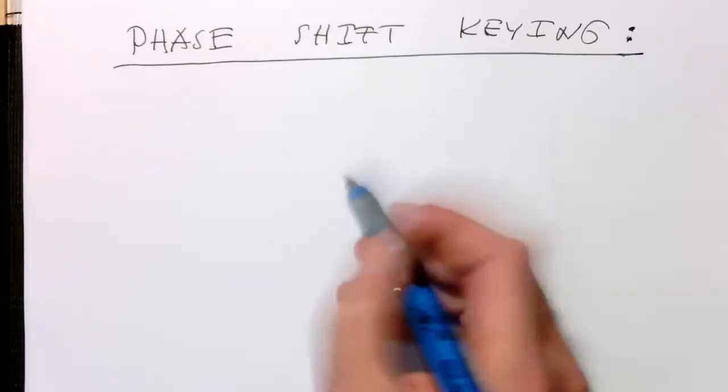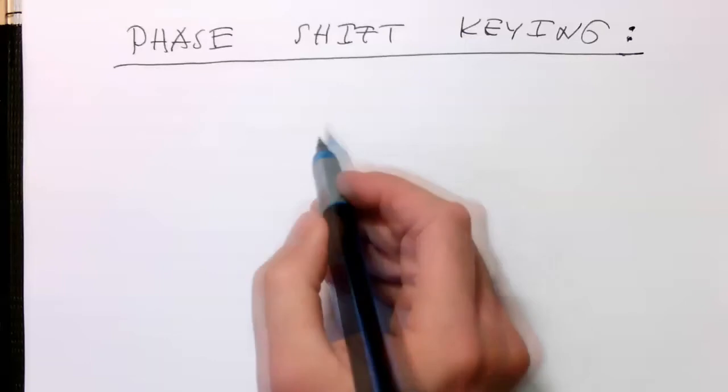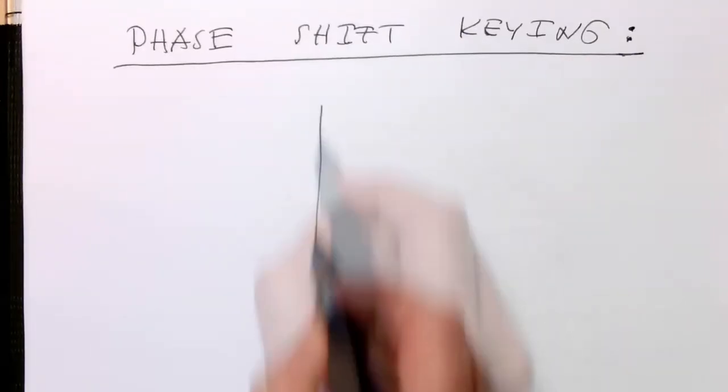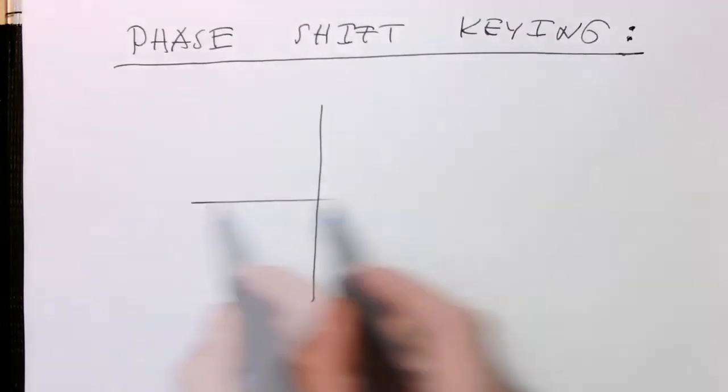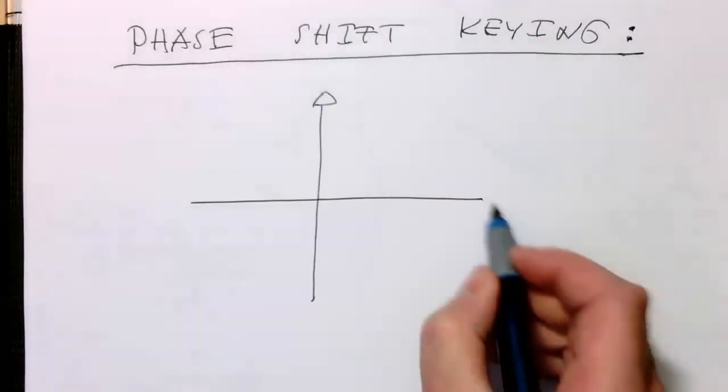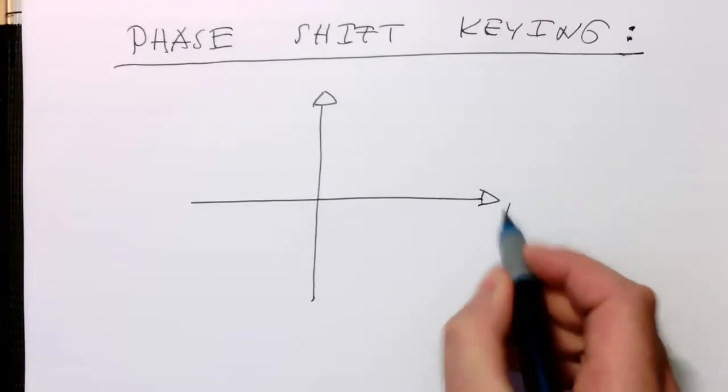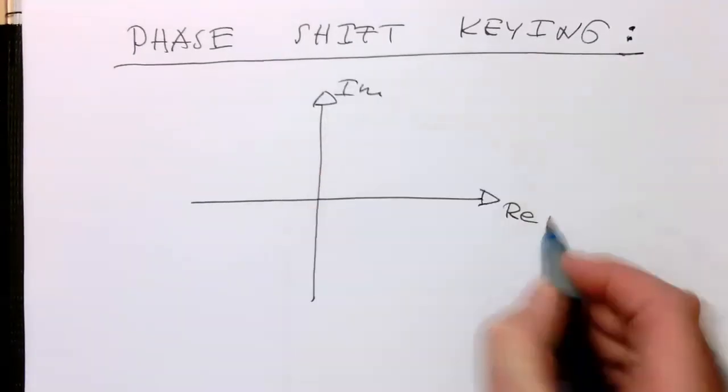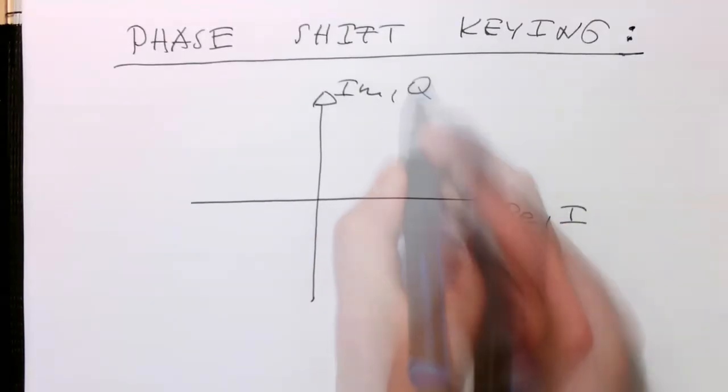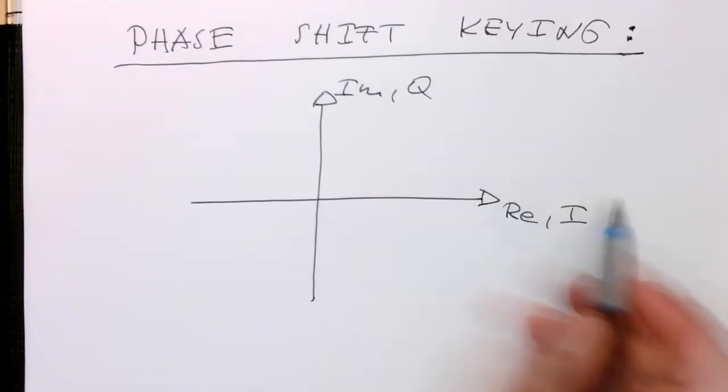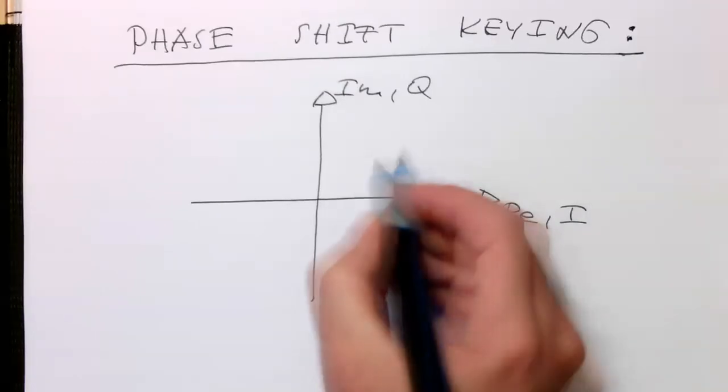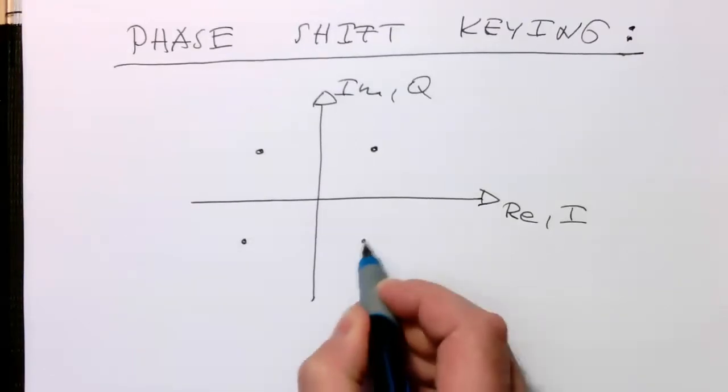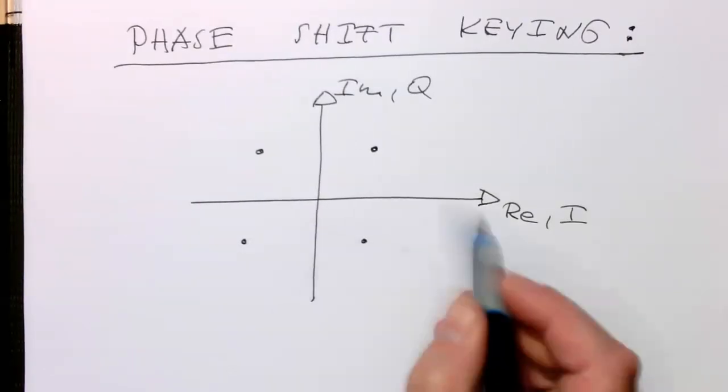We can interpret the coordinate system, the real and imaginary, which is very often called I and Q. Imagine we have our QAM constellation here.